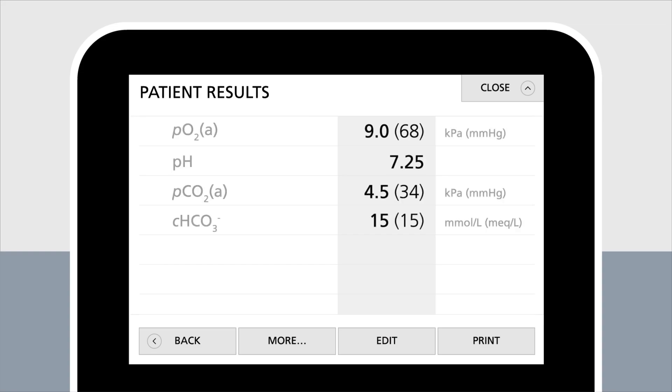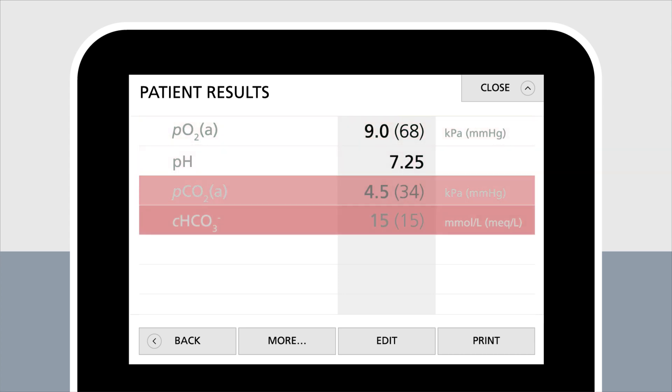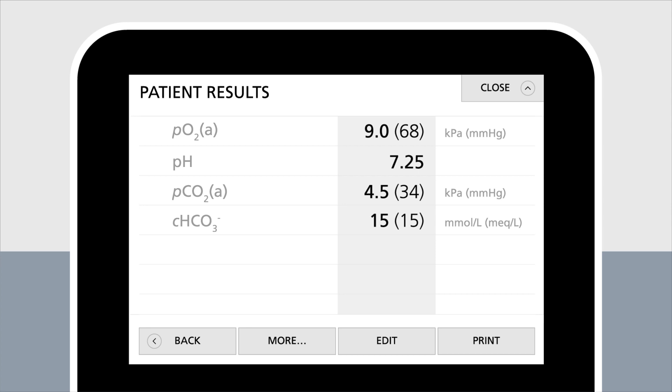A blood gas analysis is performed to evaluate vital functions in the critically ill patient. The blood gas analysis provides information on the acid-base balance and gives you parameters such as oxygen, pH, carbon dioxide, and bicarbonate, together with electrolytes and hemoglobin.